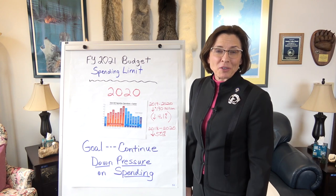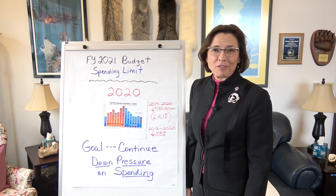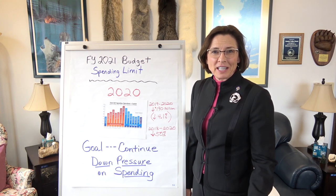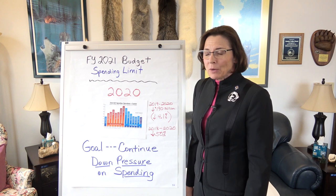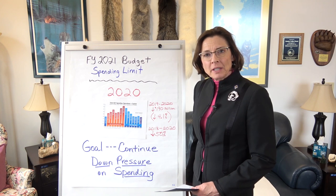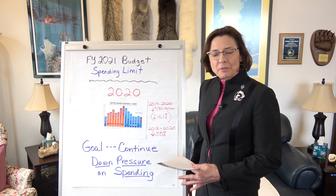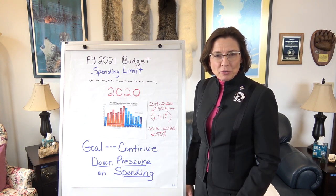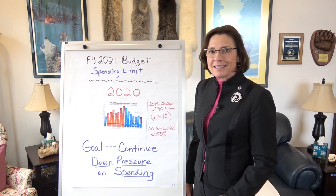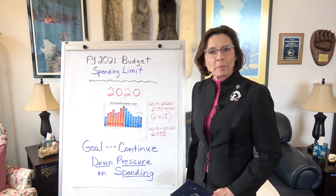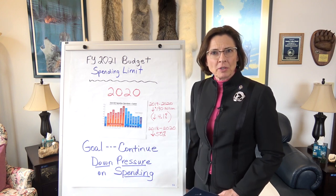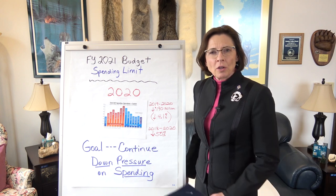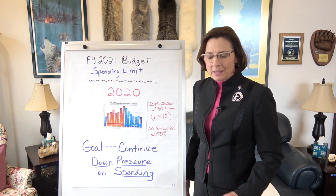Thanks for joining me for the third installment of these special videos. We've been talking about the permanent fund, the fund itself, the earnings reserve account, and today I want to talk a little bit about the budget and about the spending limit and how all of this interplays together.